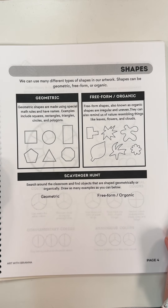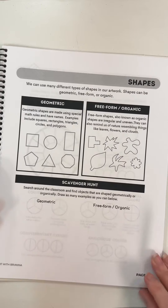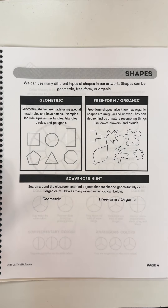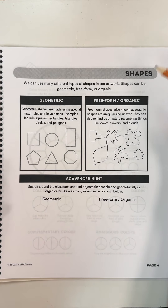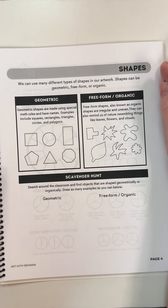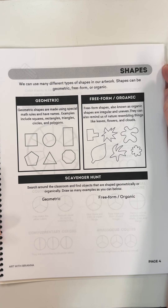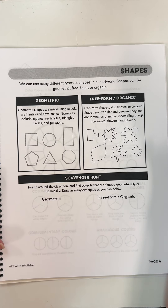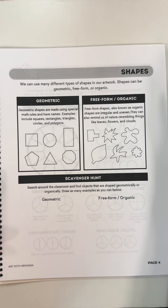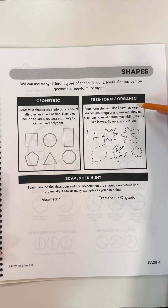Our next element of art is shape. Anytime you're drawing, you're using lines and shapes to create an image. There are many different types of shapes we can use in our artwork — they can be geometric, freeform, or organic. Geometric shapes use special math rules and have names; examples include squares, rectangles, triangles, circles, and polygons. Usually the shapes you learn about in math or geometry are geometric shapes.